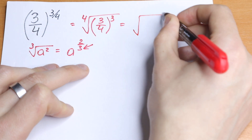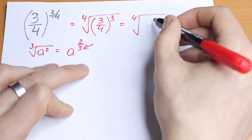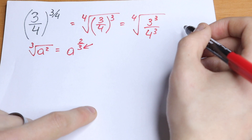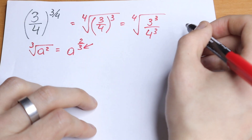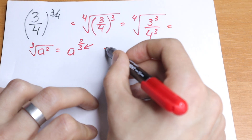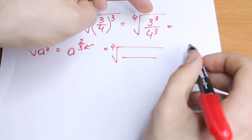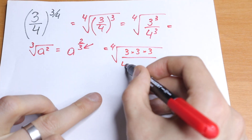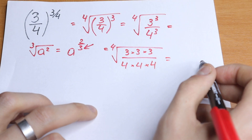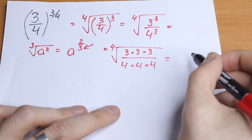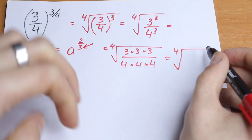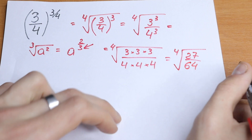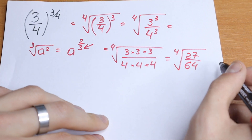What we're going to do next? Take a look. We will have a 4th root. We need to raise the fraction 3 fourths to the third power. We can write it as 3 cubed divided by 4 cubed, because we raise both numerator and denominator to this third power. So we will have 3 times 3 times 3 in the numerator, which is 27, and 4 times 4 times 4 in the denominator, which is 64. As a result we will have the 4th root of 27 over 64.